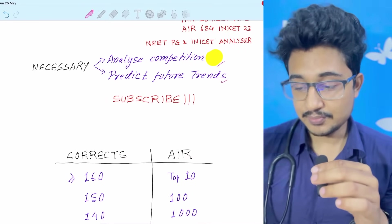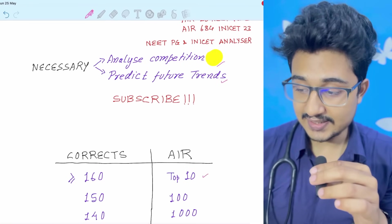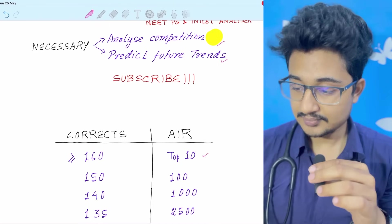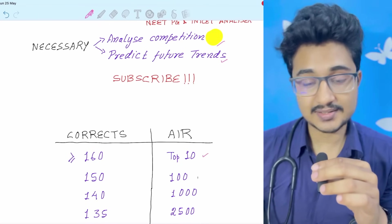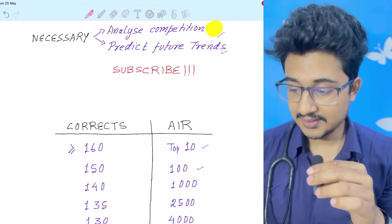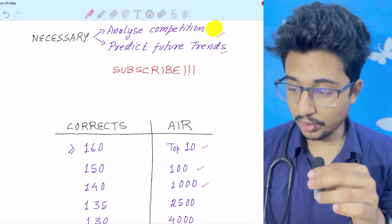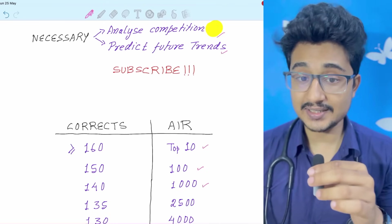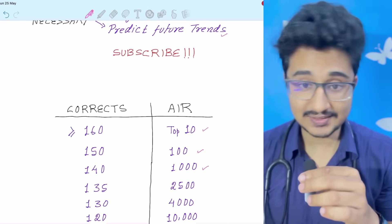At first, more than 160 corrects, the rank is in top 10. More than 150 corrects in top 100. More than 140 corrects, it's in top 1000. I had predicted 140 and it's 1000 only.